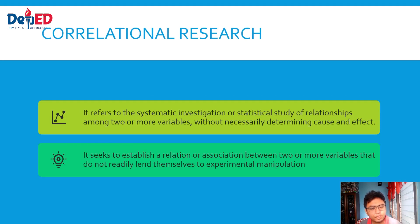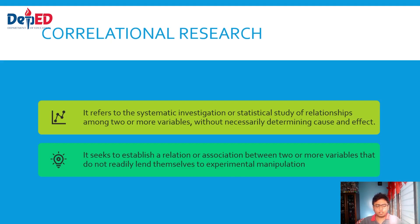Then, correlational research refers to the systematic investigation or statistical study of relationships among two or more variables, without necessarily determining cause and effect. It seeks to establish a relationship or association between two or more variables. For example, looking at the relationship between students' academic performance and their attendance, or academic performance and their gender or age.